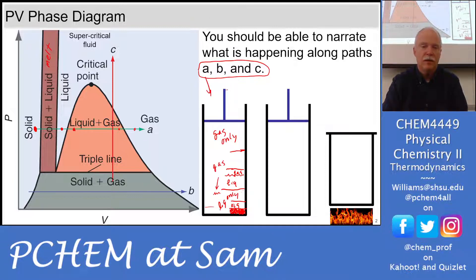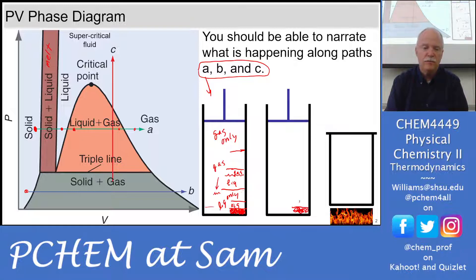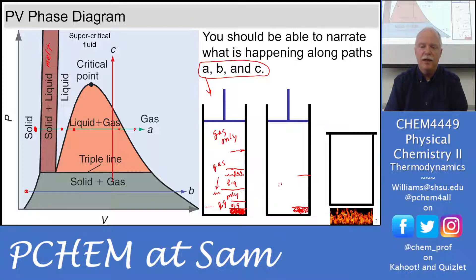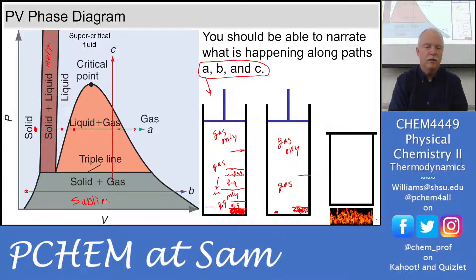For path B, we start out in the solid again with the piston pushed all the way in — solid only. Down here we're at such a low pressure that liquid just doesn't exist below this pressure, so we go straight from solid to gas. We get up to this height and it's gas, and our solid has shrunk down; eventually we're at gas only. In this region it's solid and gas — that's the sublimation region.